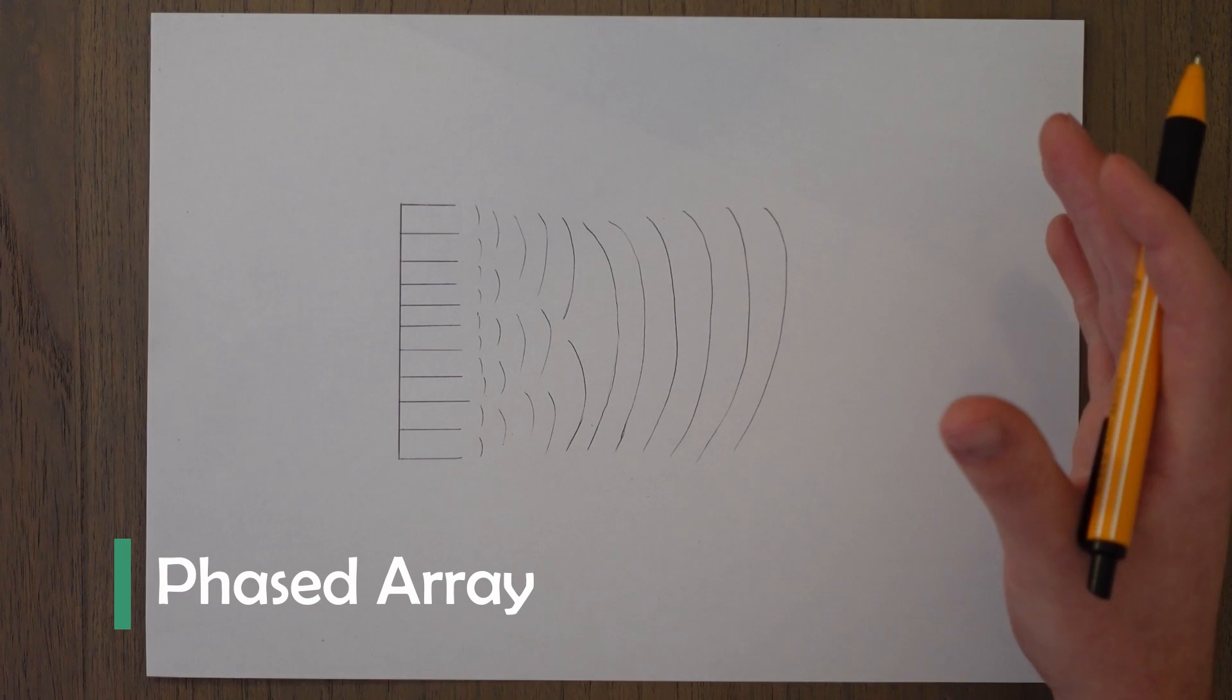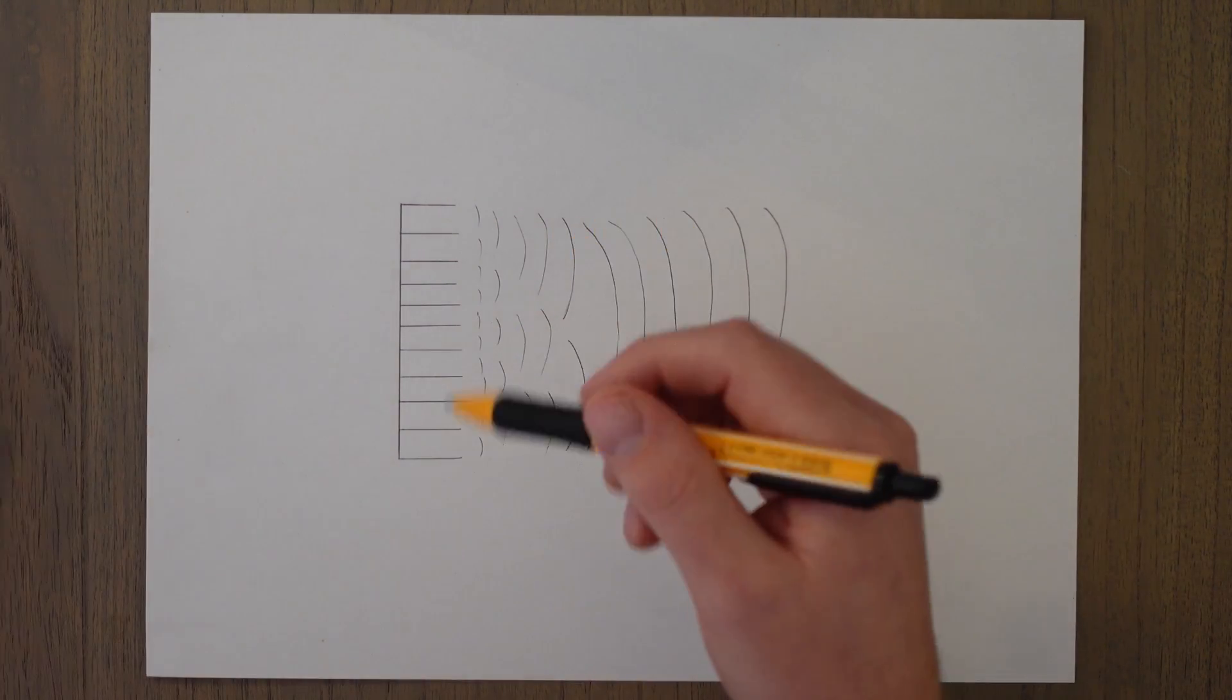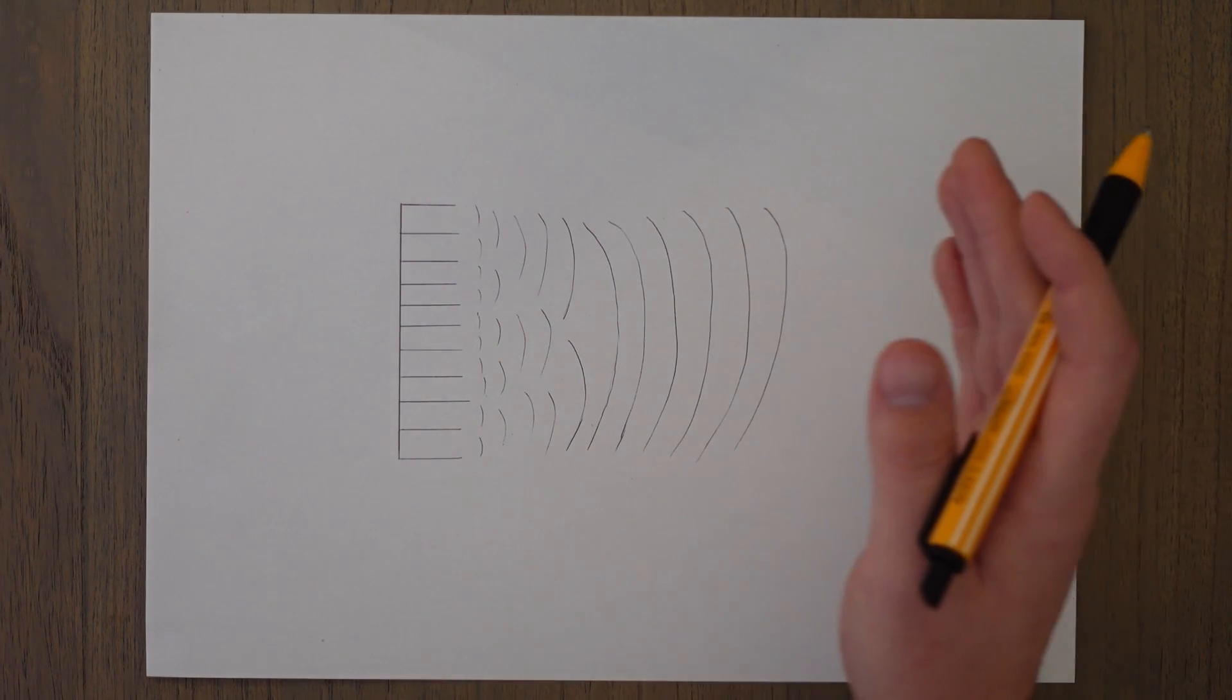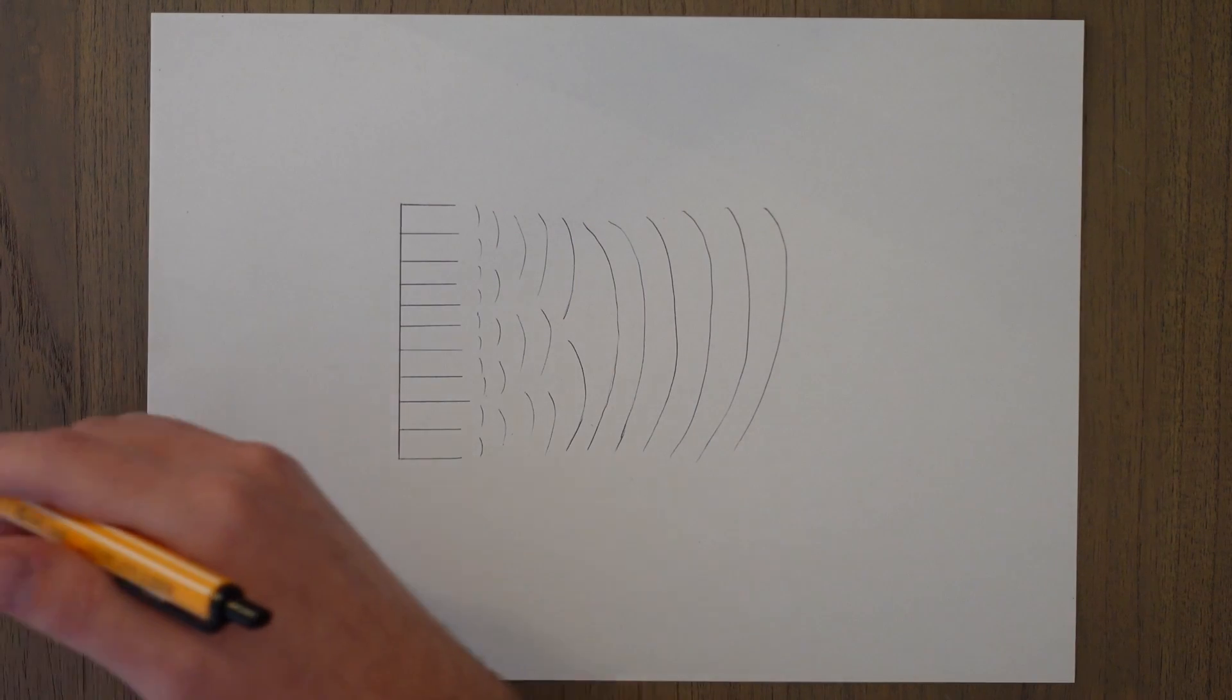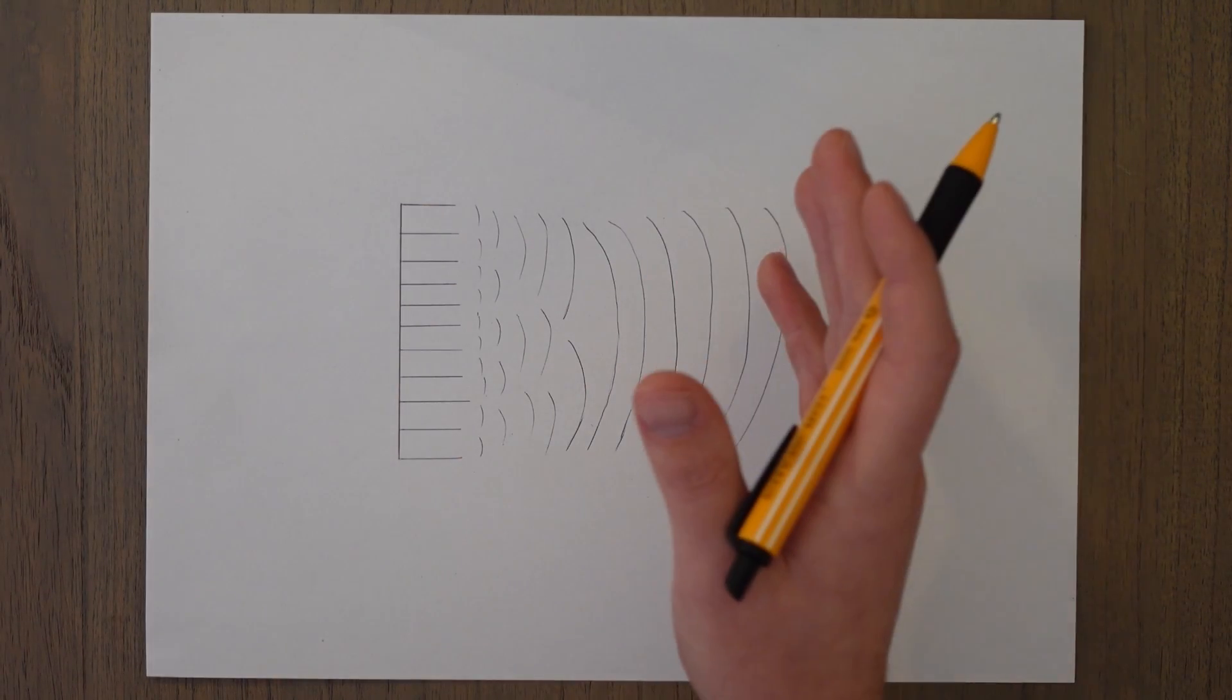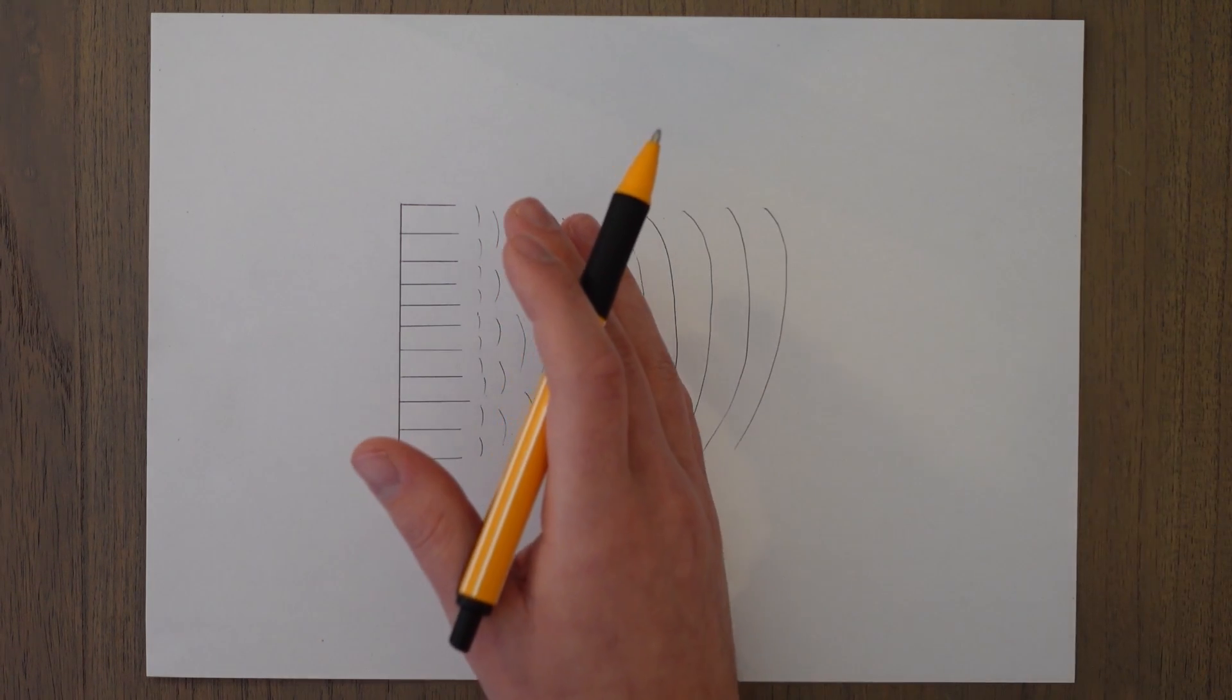A phased array antenna is a big group of antennas very precisely arranged so that the phases of the radio waves being sent out are concentrated in one direction. What this means is it can effectively work as a parabolic antenna as we saw previously without the need for that big dish. This type of antenna is used commonly along with a parabolic antenna for airport radar systems.